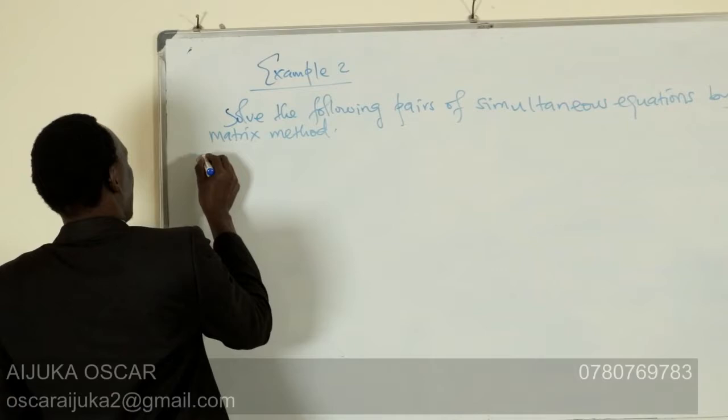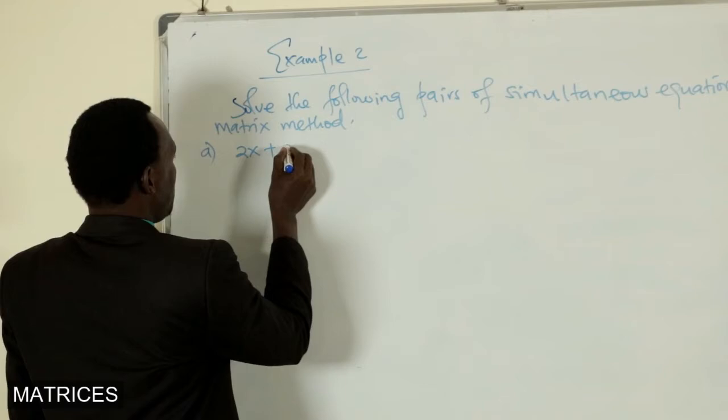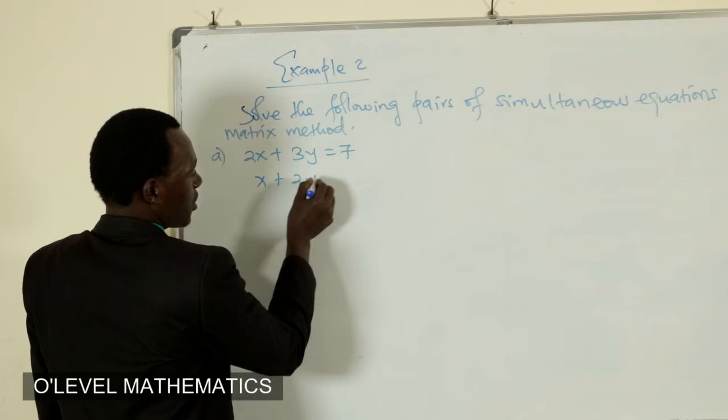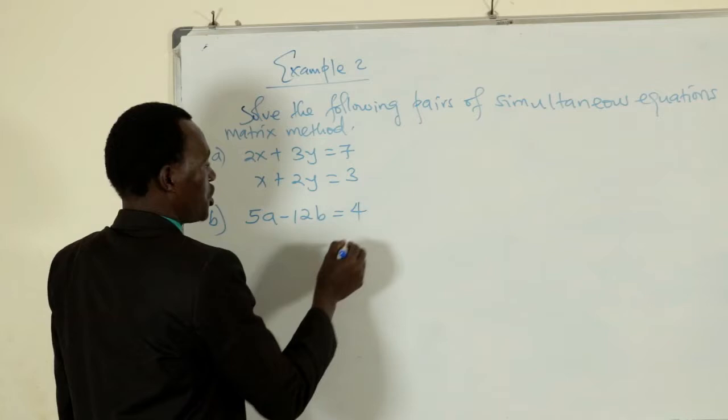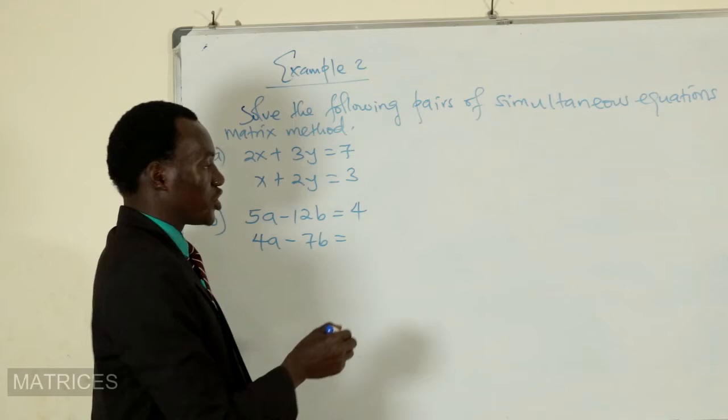Part A is 2x plus 3y is equal to 7 with x plus 2y equal to 3. Part B we shall solve 5a minus 3b is equal to 4 with 4a minus 7b is equal to negative 2.